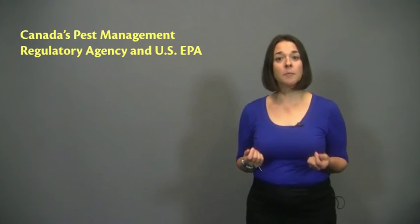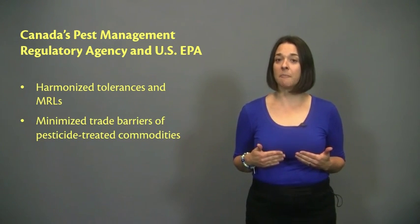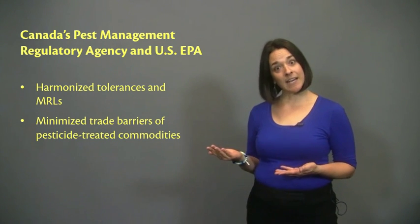In 2005, Canada's Pest Management Regulatory Agency and EPA harmonized tolerances and MRLs to minimize trade barriers of pesticide-treated commodities between the United States and Canada.